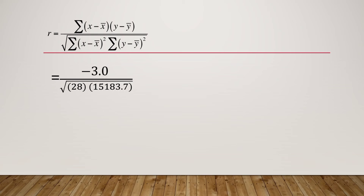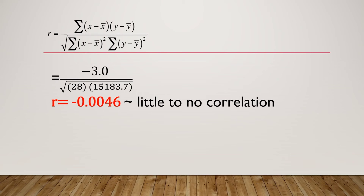Now that we have solved for these values, we substitute them into the equation to solve for r. For the numerator we have negative 3.0, all over the square root of 28 times 15,183.7. Our r equals negative 0.0046, which means there is little to no correlation.